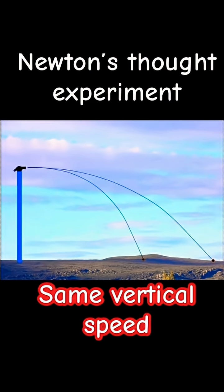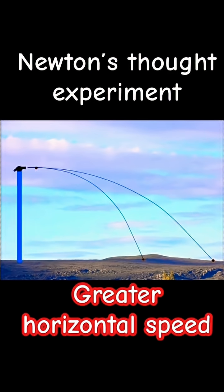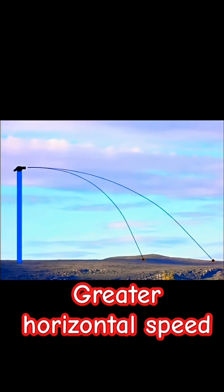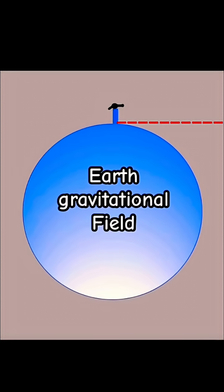Do it again and it would travel even further as we have a faster horizontal velocity. Now Newton said, imagine I could build a huge tower that goes out into outer space and I launch at even faster velocities. Do you notice, as the Earth is spherical, it's actually sort of falling away from our initial velocity.